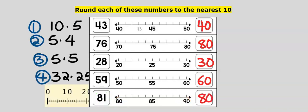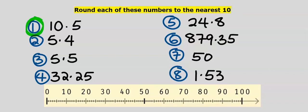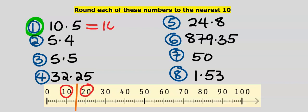Let's round each of these numbers to the nearest ten. Let's consider 10.5. 10.5 is between 10 and 20. Halfway between them is 15. 10.5 is closer to 10 than to 20. Our answer is 10.